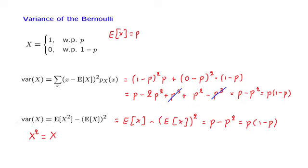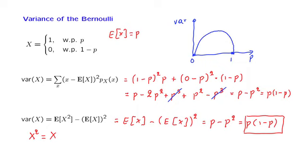The variance of the Bernoulli random variable has an interesting dependence on p. It's instructive to plot it as a function of p. This is a plot as p ranges between 0 and 1. p(1-p) is a parabola that is 0 when p is 0 or 1. The peak occurs when p equals 1/2, in which case the variance is 1/4.